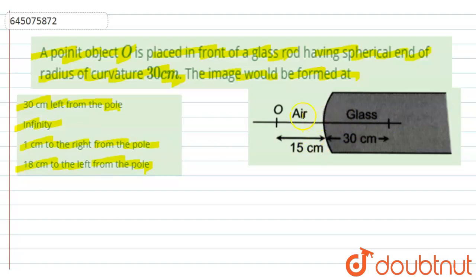We are having two mediums, air and glass, and the pole point would be this center point. This point will be the pole and all distances will be measured from this pole point only. And object O is placed at a distance of 15 centimeter to the left of the pole.